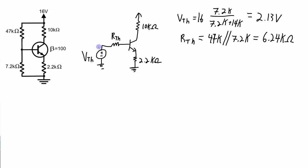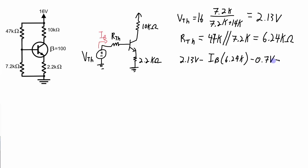Next I want to figure out what the base current is. The base current is going to be determined from this voltage loop right here. In that loop I have my 2.13 volt source, a drop across RTH equal to IB times RTH, then a drop across the 0.7 volt base-emitter junction, and then a drop across the emitter resistor, all adding up to 0 volts back to the ground reference.